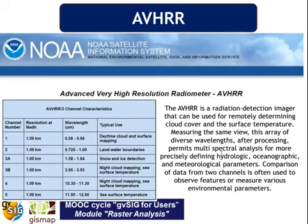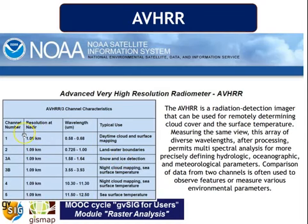Another sensor is AVHRR, which is used mainly for cloud and surface mapping, land-water boundaries, snow and ice detection, and other environmental topics. Its resolution is one kilometer, meaning it can be used at national level for non-detailed information, but it is free and can be used for various purposes.